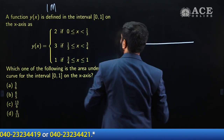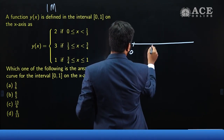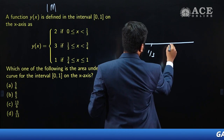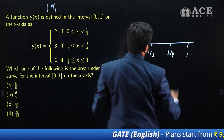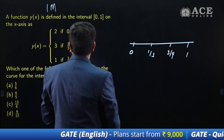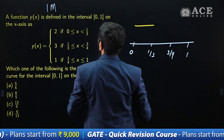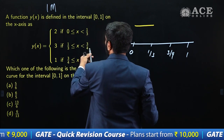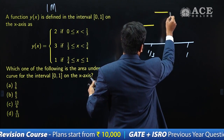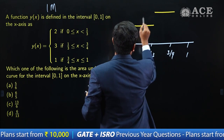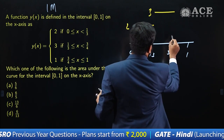It's defined like this. Let me mark this point as 0. This is 1/3. This is 3/4. And then this is 1. In the interval 0 to 1/3, it is defined as 2. In the interval 1/3 to 3/4, it is given as 3. And in the interval 3/4 to 1, it is given as 1.